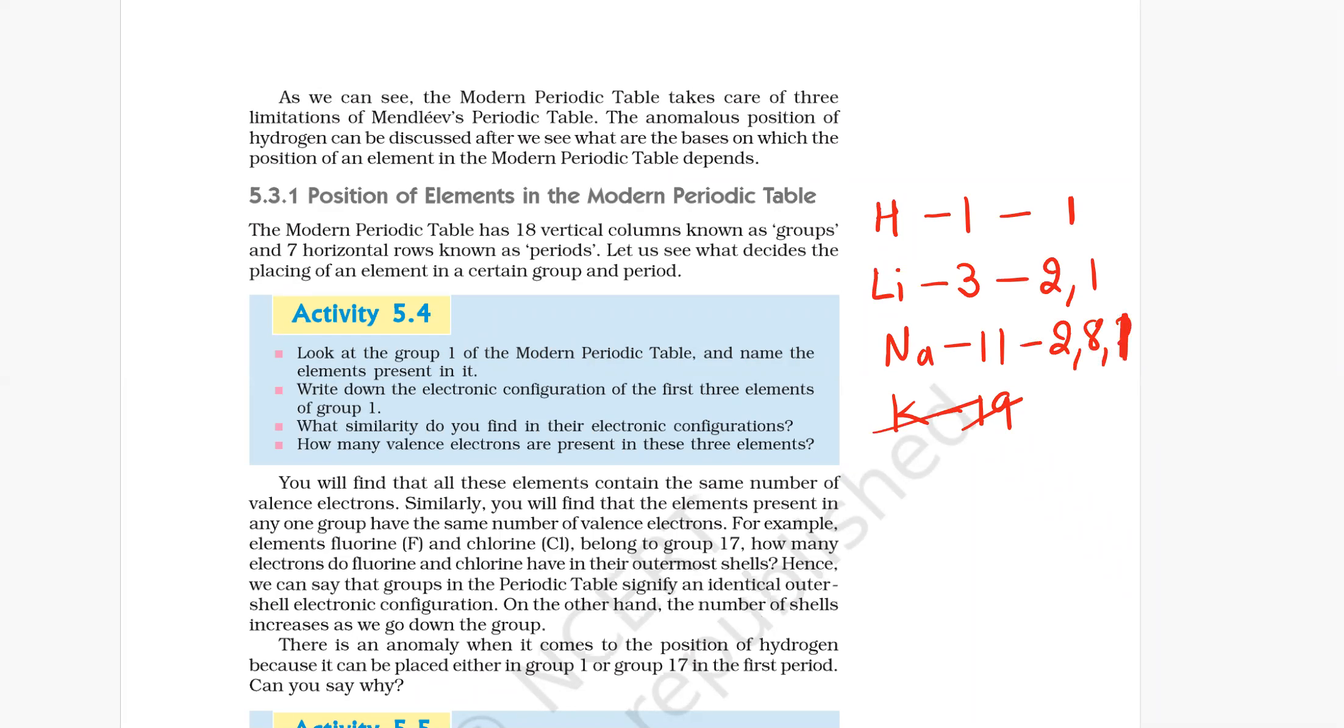So what similarity do you find in their electronic configuration? All of them have one electron in their outer motion. How many valence electrons are present in these three elements? Only one electron is present in the outer motion.